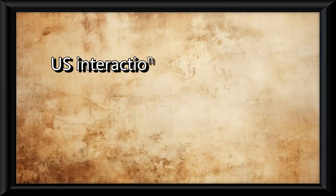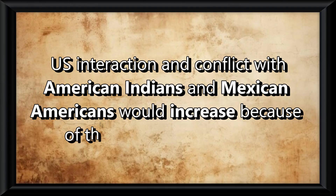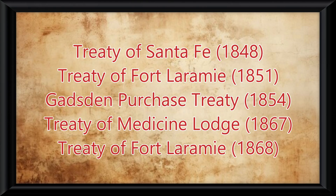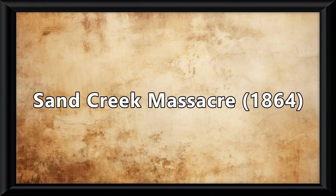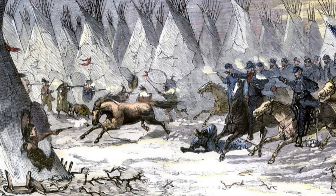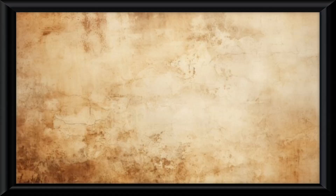It should also be noted that US interaction and conflict with American Indians and Mexican-Americans would increase because of westward expansion. These often resulted in many unfair treaties, or in the case of Sand Creek, it would lead to a bloody massacre where hundreds were said to have been slaughtered in 1864.